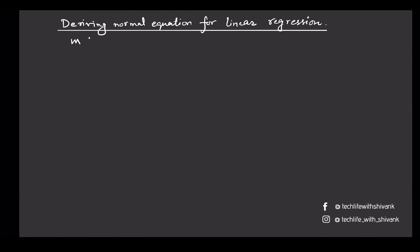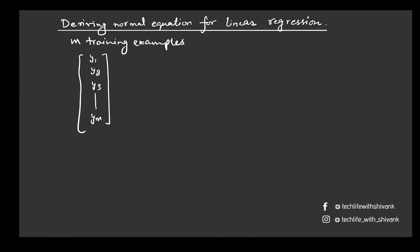Let's say we have m training examples in our dataset. The true values for those m training examples are y1 to ym, and we denote this vector of y's by capital Y. We want to predict the weights w1, w2, up to wN, and we denote this vector as capital W.